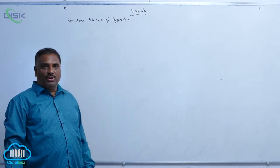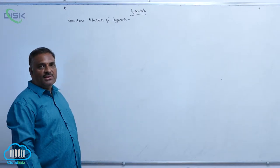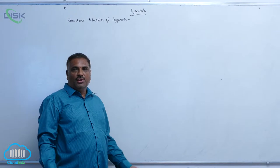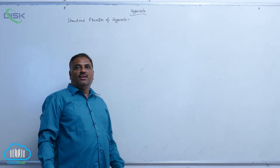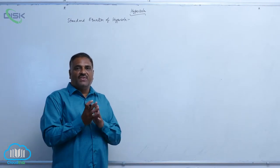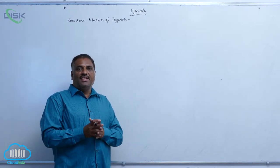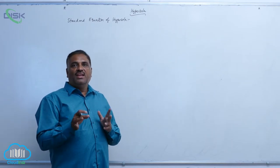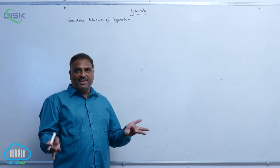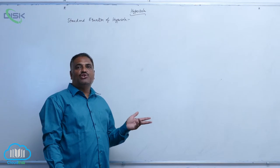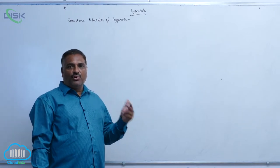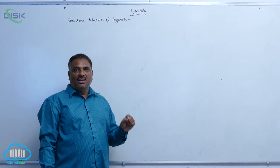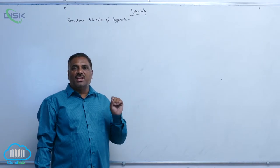This is a new topic called hyperbola. Let us develop the definition of hyperbola. Hyperbola is a conic satisfying the condition SP by PM equal to E, where E is greater than 1. That is, the ratio of the distances from focus and directrix is equal to a constant which is greater than 1.